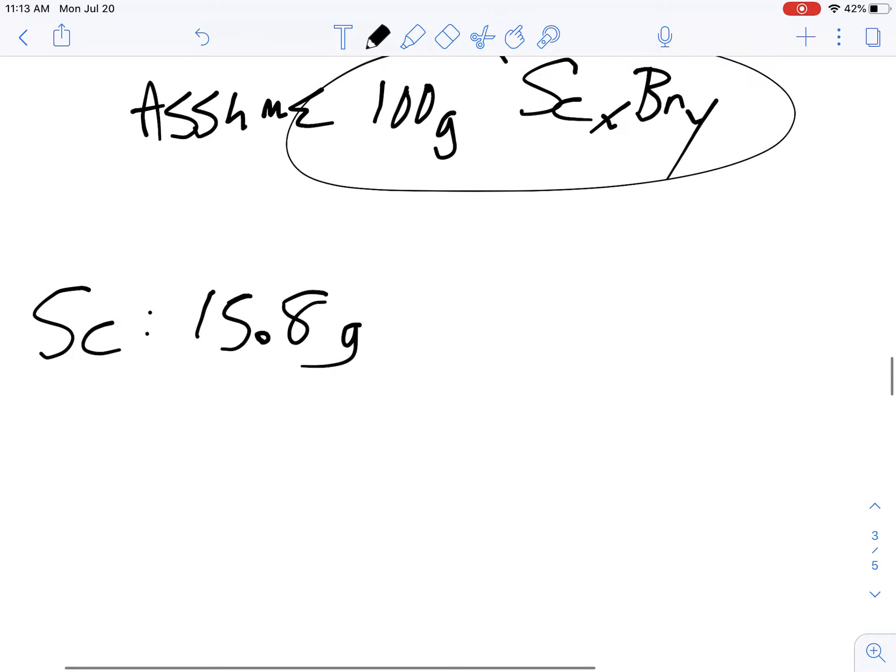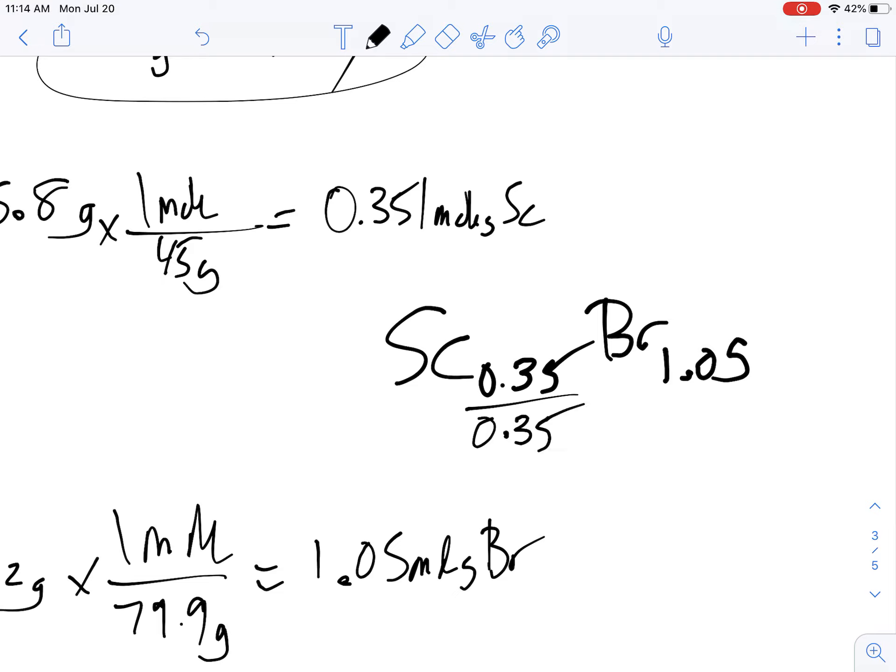And so now what you do is you write your formula, except it's going to look pretty weird, because the scandium is going to be 0.35 and the bromine is going to be 1.05, and that doesn't at all look right. These should be whole numbers, and right now they are decimals. Well, what this is basically doing is telling you the ratio. For every 0.35 of these guys, you have 1.05 of these guys. So let's try to see if we can get those into whole numbers. And how do you get them into whole numbers? You simply divide by the smaller of the two numbers. So I'm going to divide 0.35 by 0.35, and I'm going to divide 1.05 by 0.35.